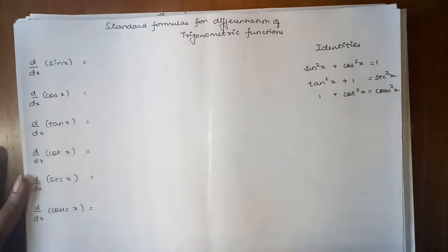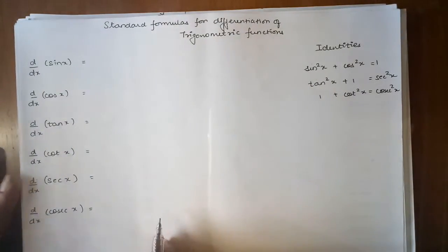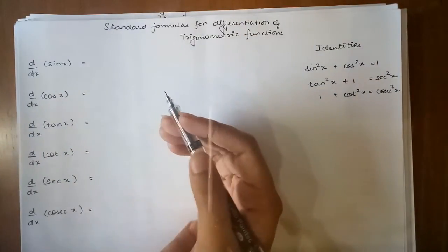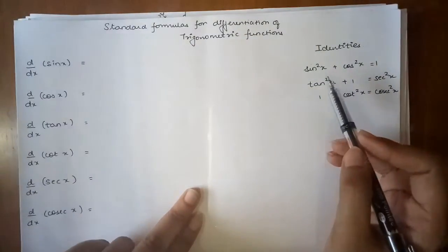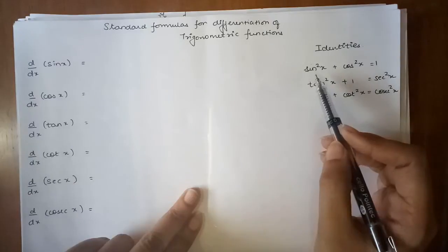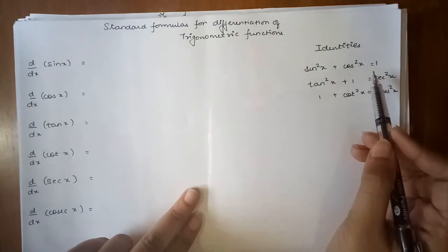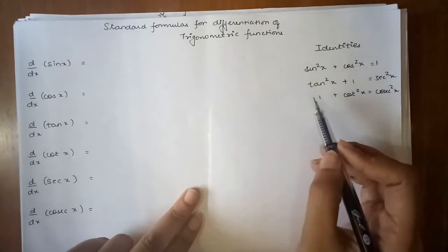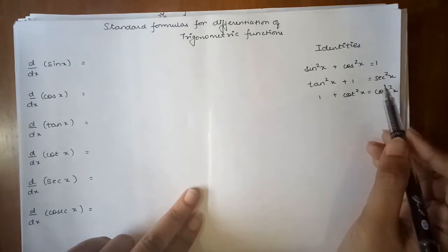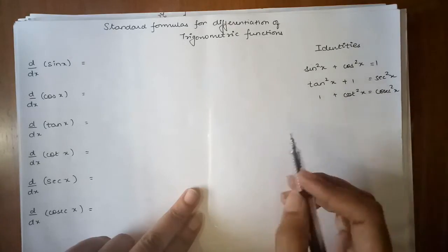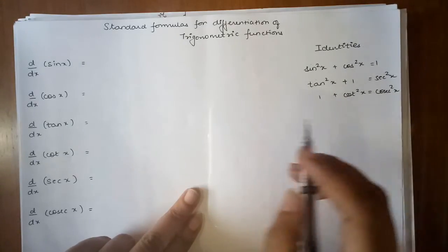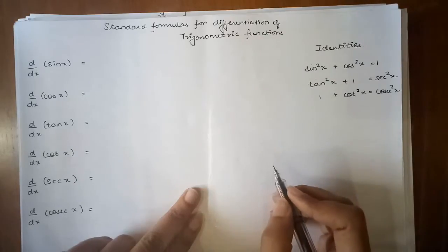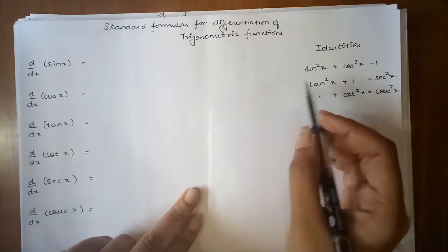Before I begin, I want us to revise the identities of trigonometry. That is: sin²x + cos²x = 1, tan²x + 1 = sec²x, and 1 + cot²x = cosec²x.